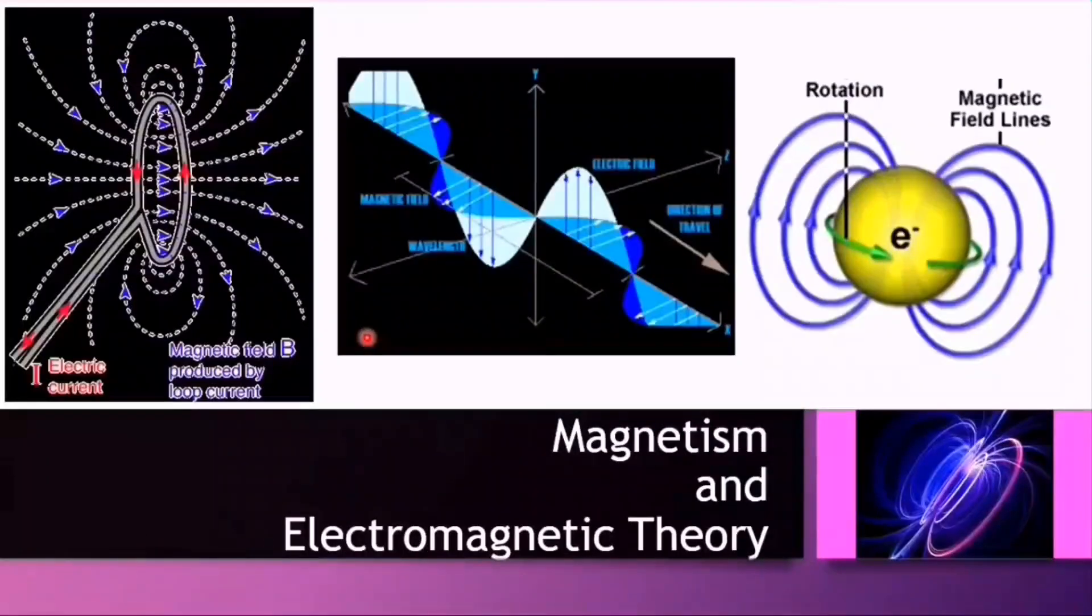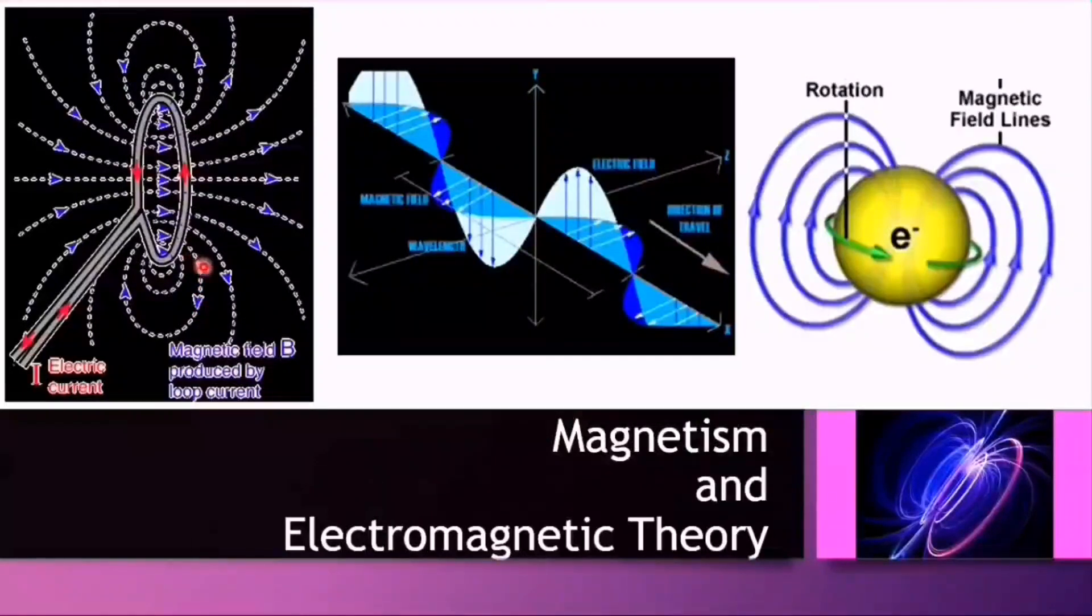Magnetism originates from the spin and orbital magnetic moment of an electron around the nucleus that is analogous to the current in a loop of wire. Therefore, magnetism is an aspect of the combined electromagnetic force. It is a relativistic effect.